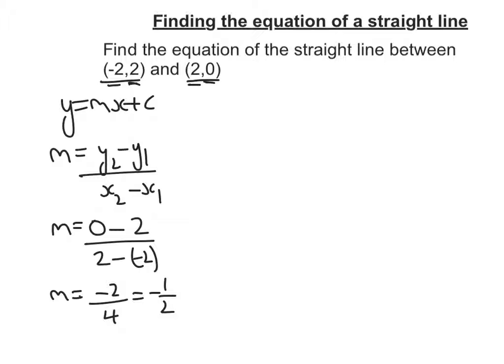So substitute that m into my equation, I get y equals negative half x plus c. Now I'm going to substitute one of my two points into this equation to find c, so I'm going to put in 2, 0, so if I substitute in 2, 0 into my equation,